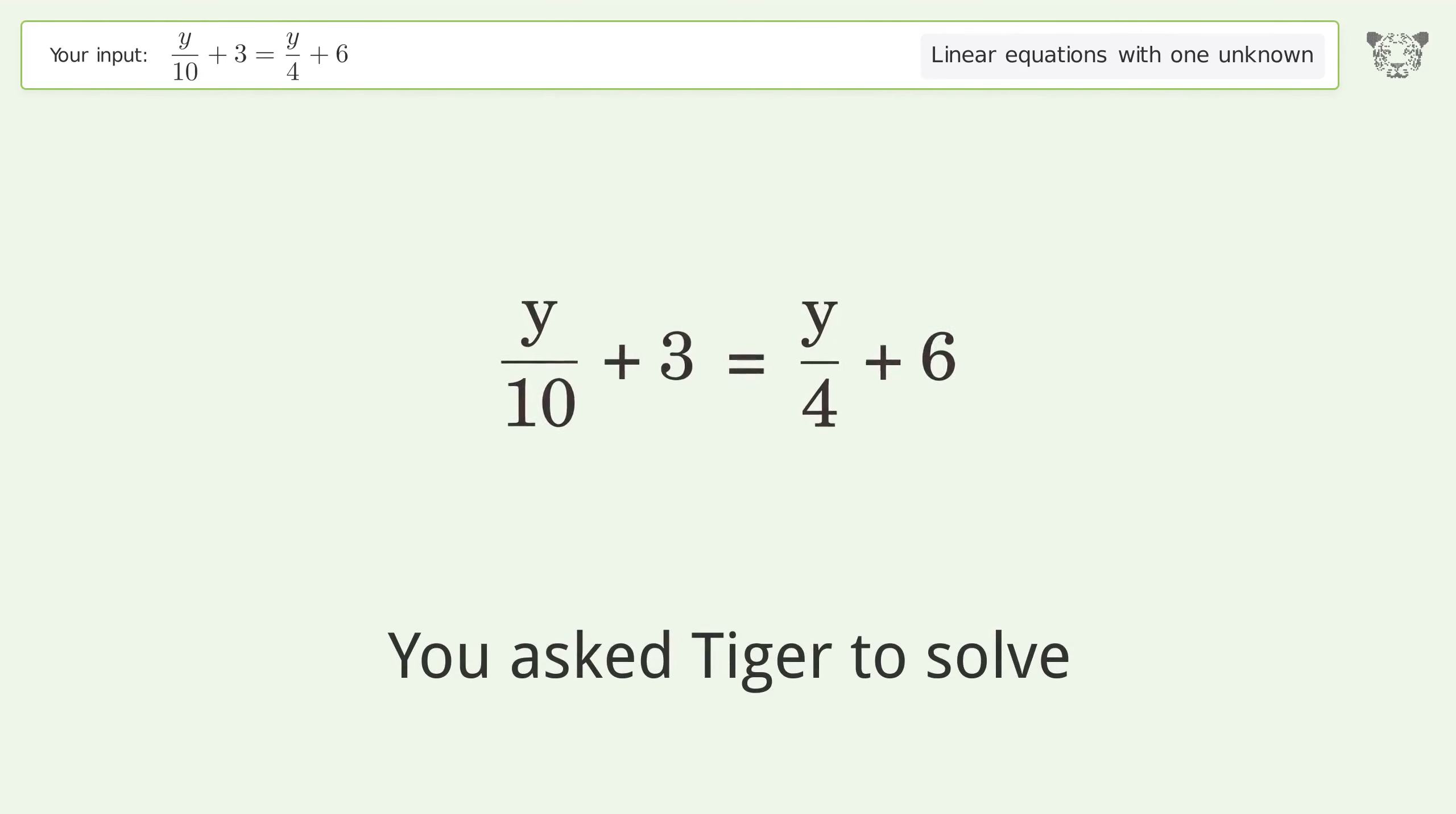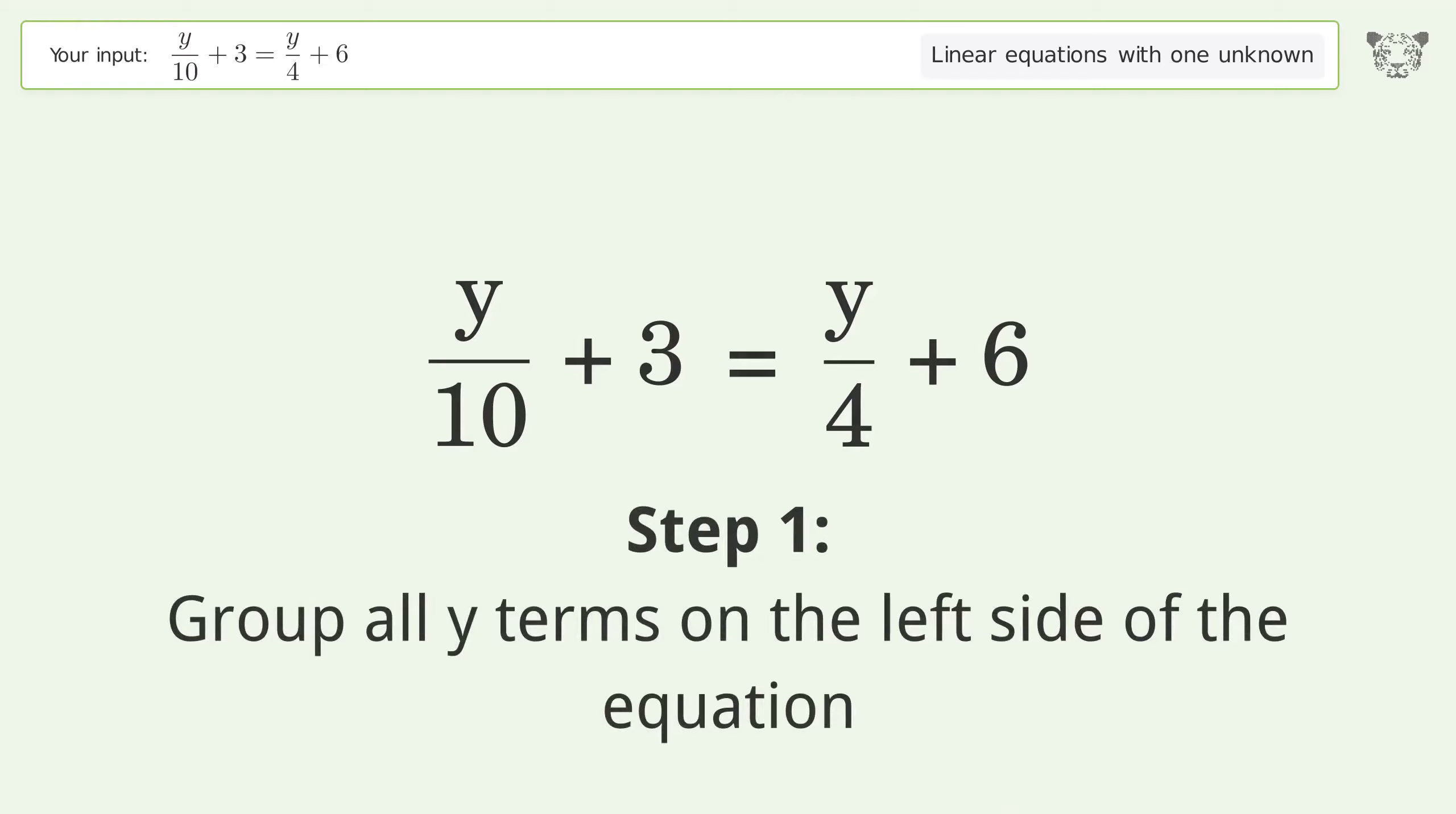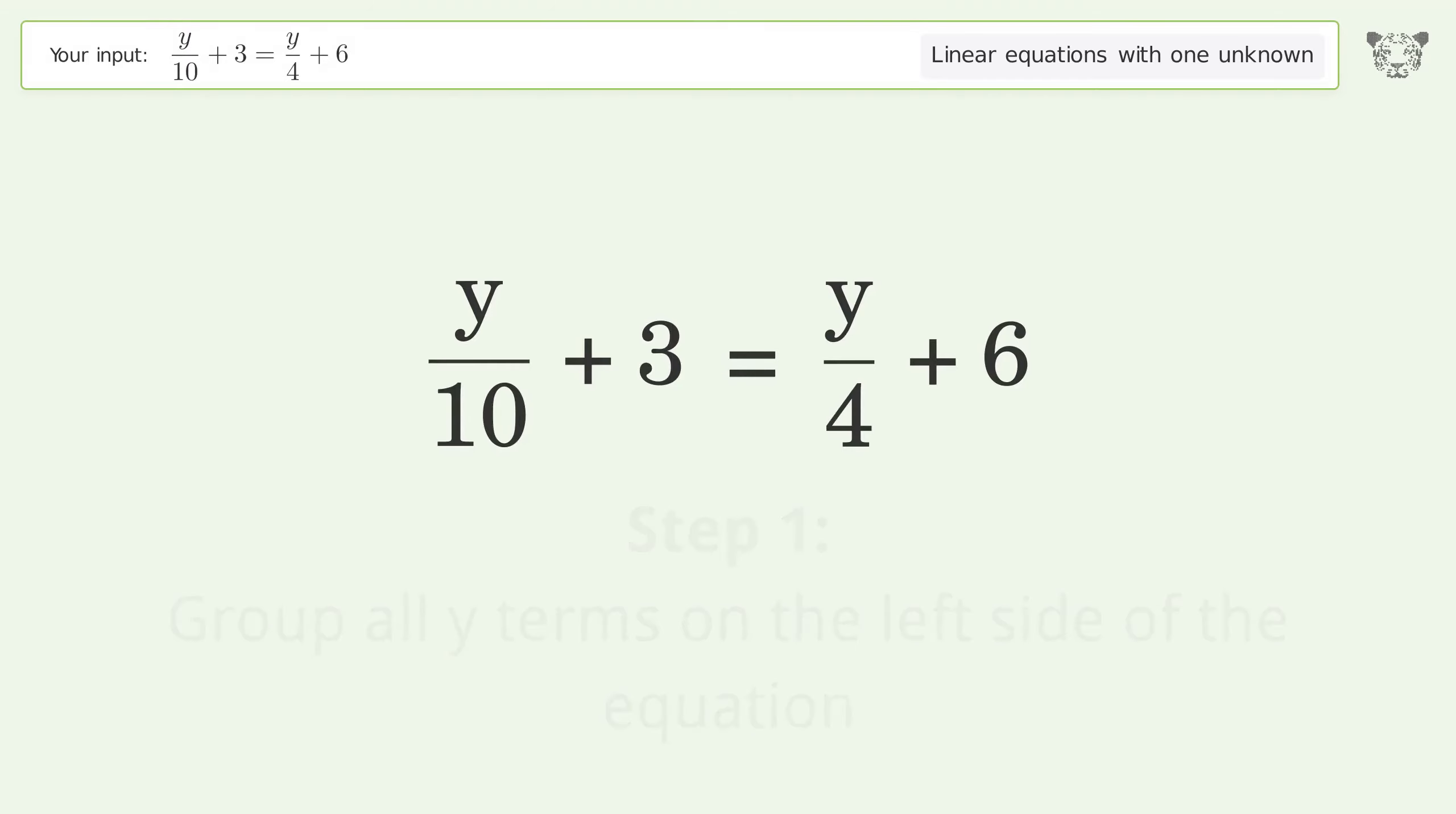You asked Tiger to solve this. This deals with linear equations with one unknown. The final result is y equals negative 20. Let's solve it step by step. Group all y terms on the left side of the equation. Subtract y over 4 from both sides.